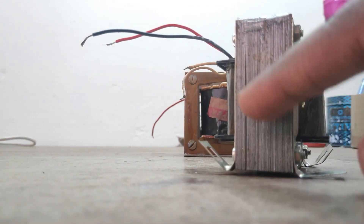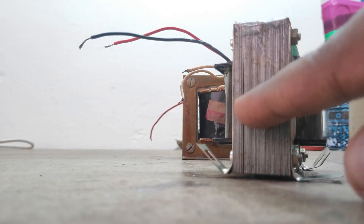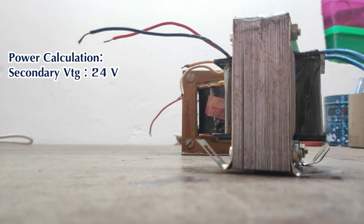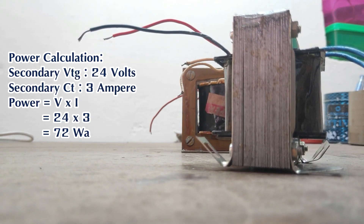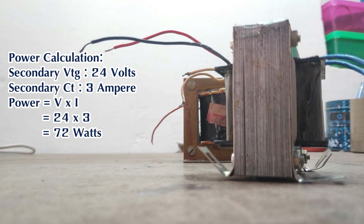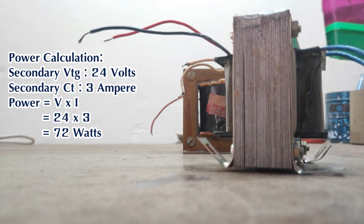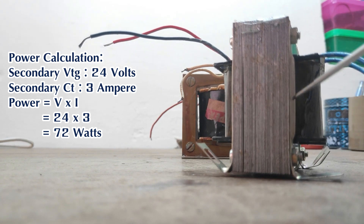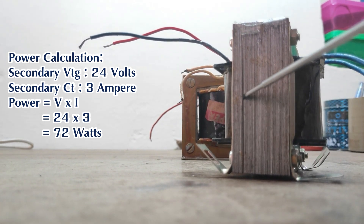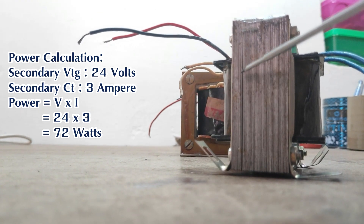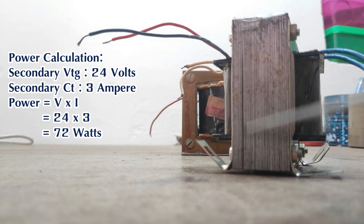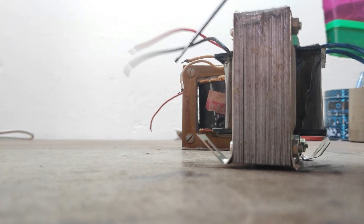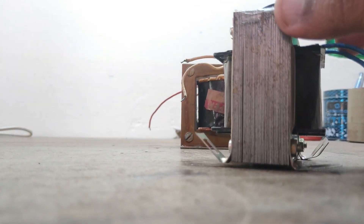We can prefer a 3-ampere transformer, which is suitable for the STK4141 amplifier. To verify the transformer can supply sufficient power, we use the formula P = V × I. For a 24-volt, 3-ampere transformer, the power is 24 × 3 = 72 watts. The STK4141 amplifier requires only 60 watts, so the power supplied by the transformer is higher than the power required by the amplifier — confirming it is a suitable choice.